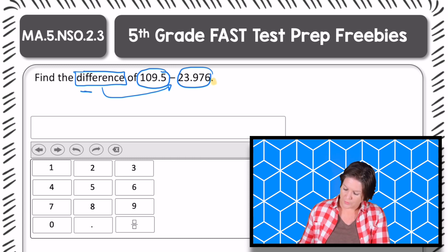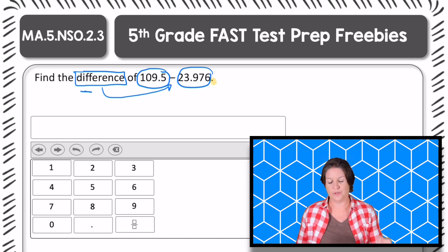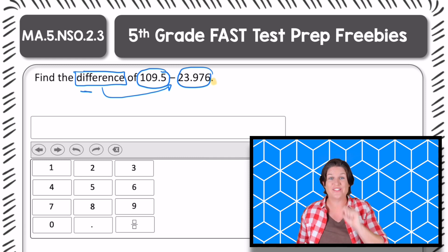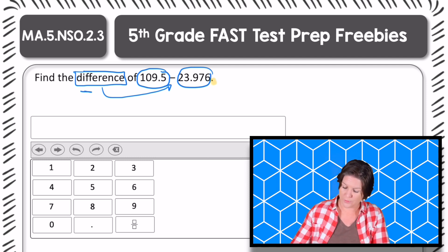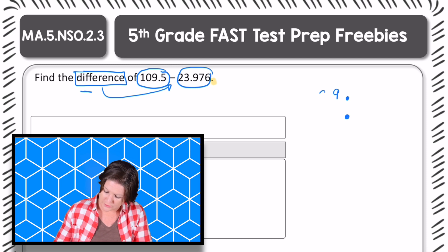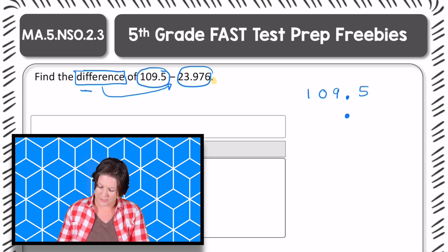So I do notice right away that my first number goes to the tenths place. And my second number goes to the thousandths place. So I need to remember that when I add or subtract with decimals, I need to line up those decimals. So I'm going to go ahead and put the decimals together right here like this, just to make sure they're nice and lined up. And then I'm going to place 109 right there and kind of spread it out to make it easier for me to work. And that five goes in the tenths place.